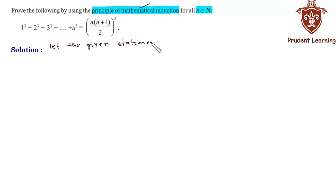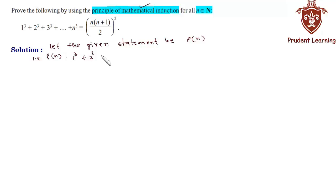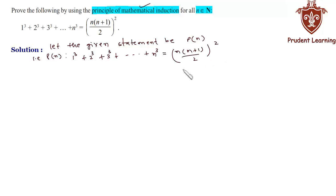Let the given statement be P(n), such that 1³ + 2³ + 3³ + ... + n³ is equal to [n(n+1)/2]², and now we will check whether the given equation holds true or not for n = 1.